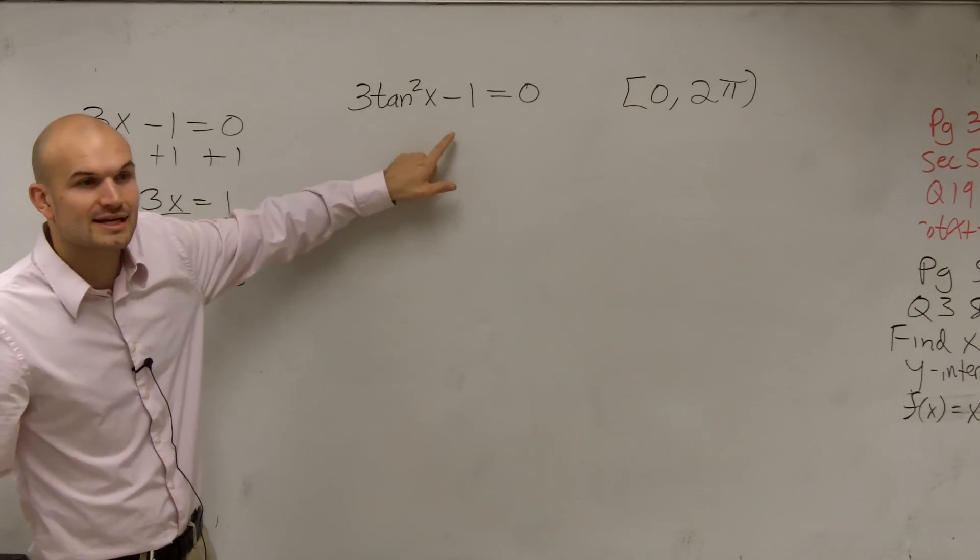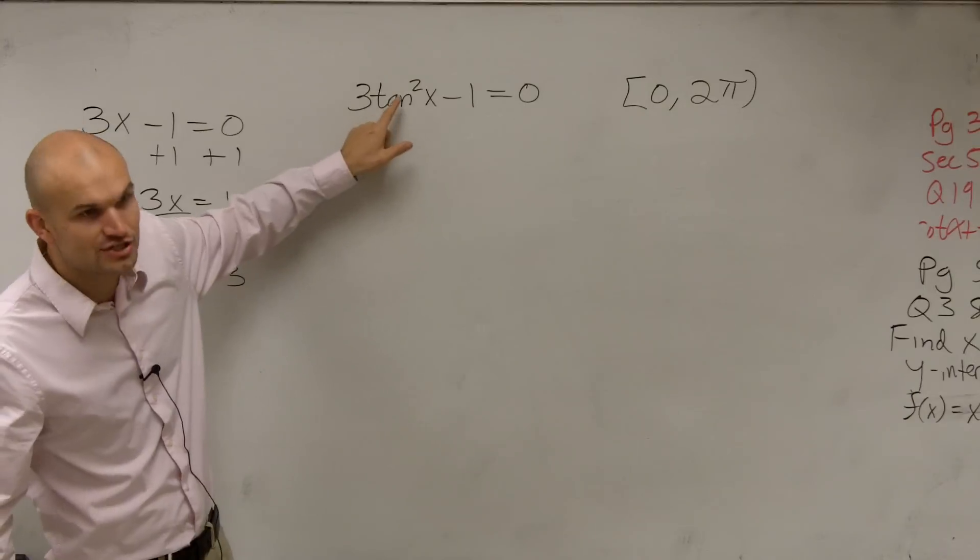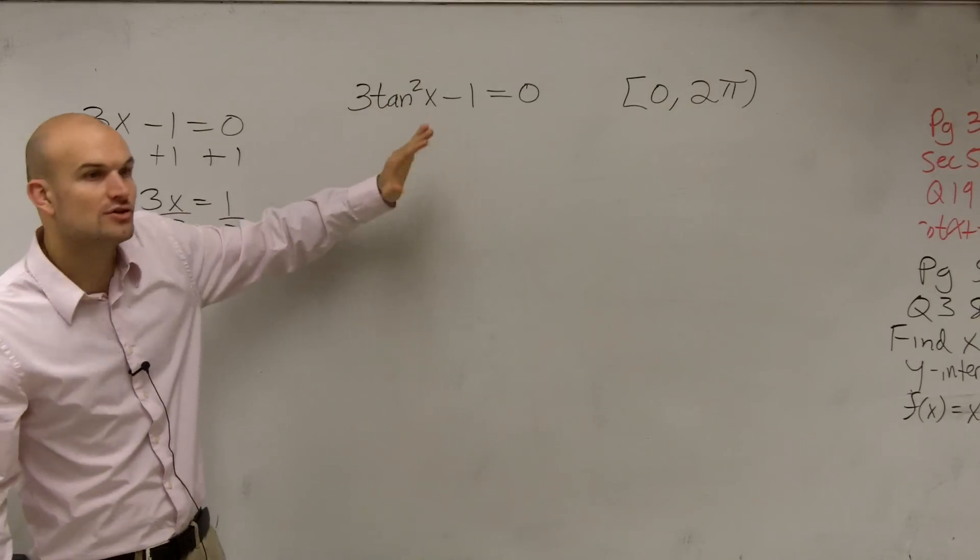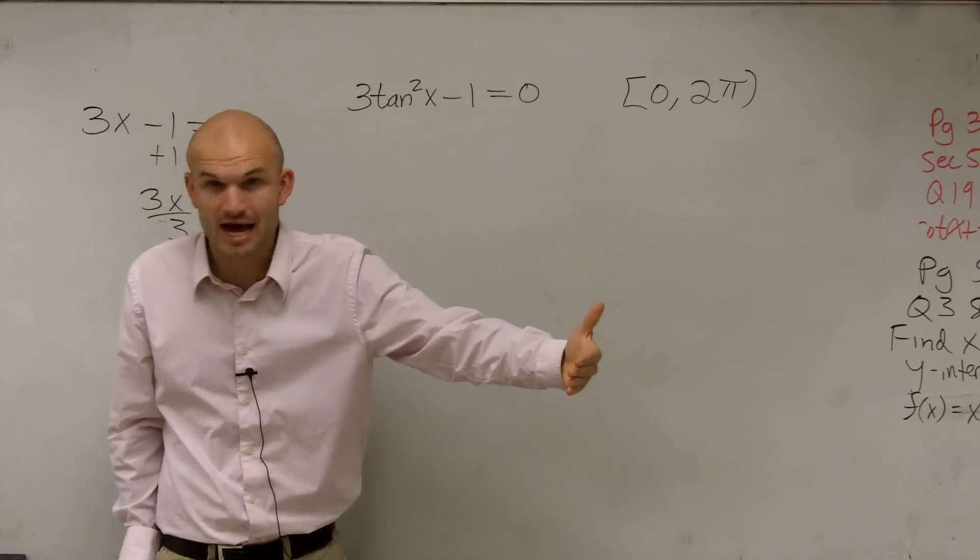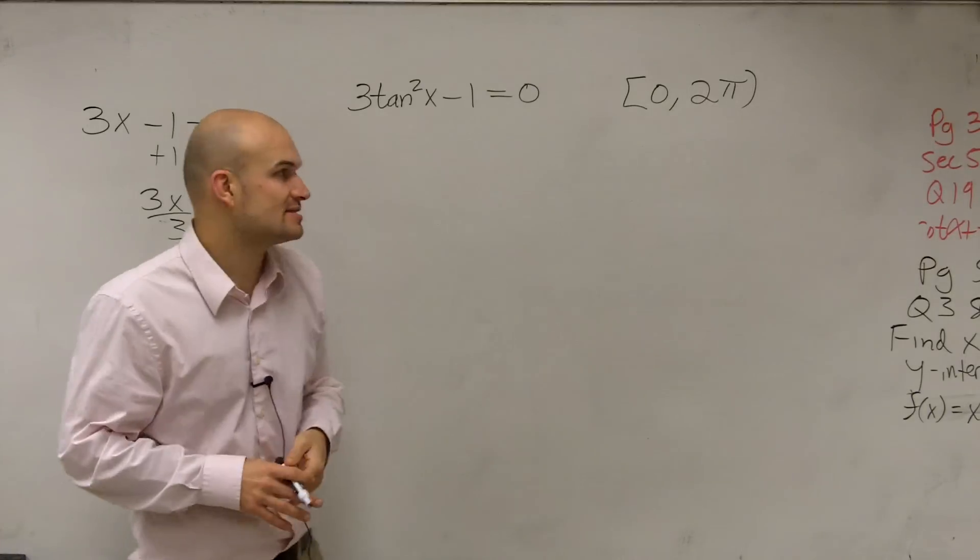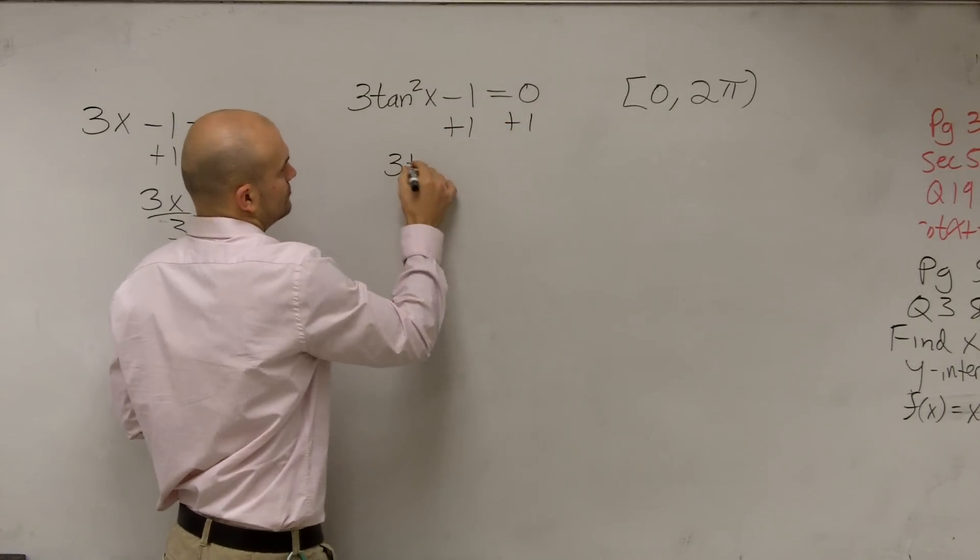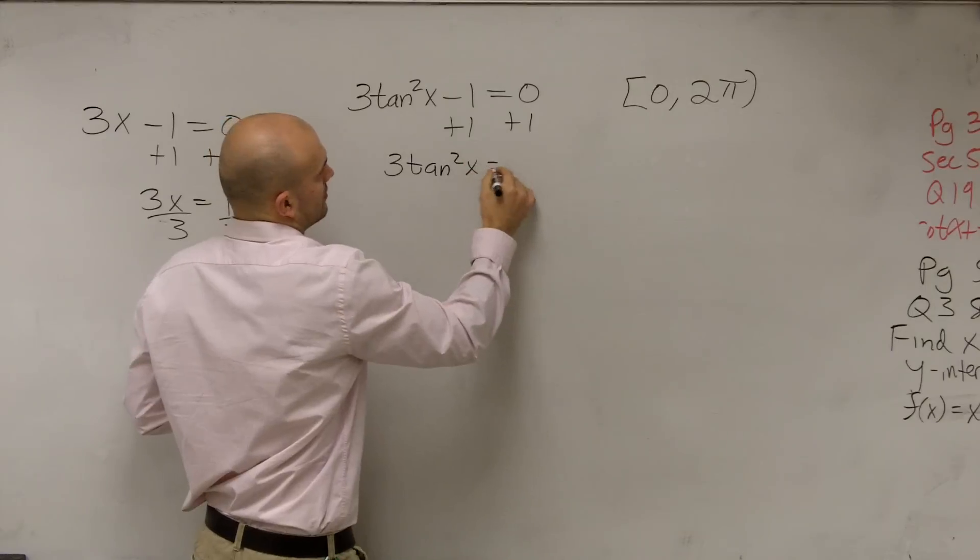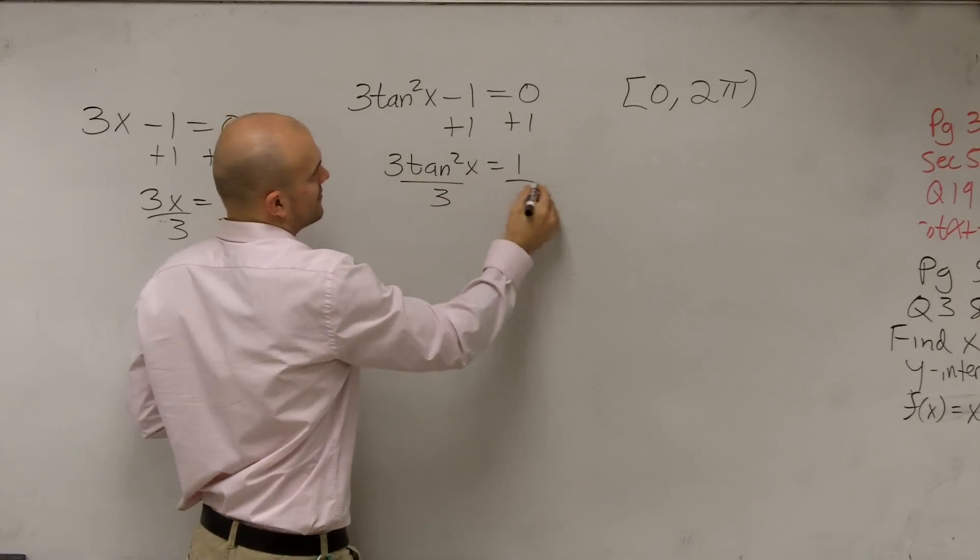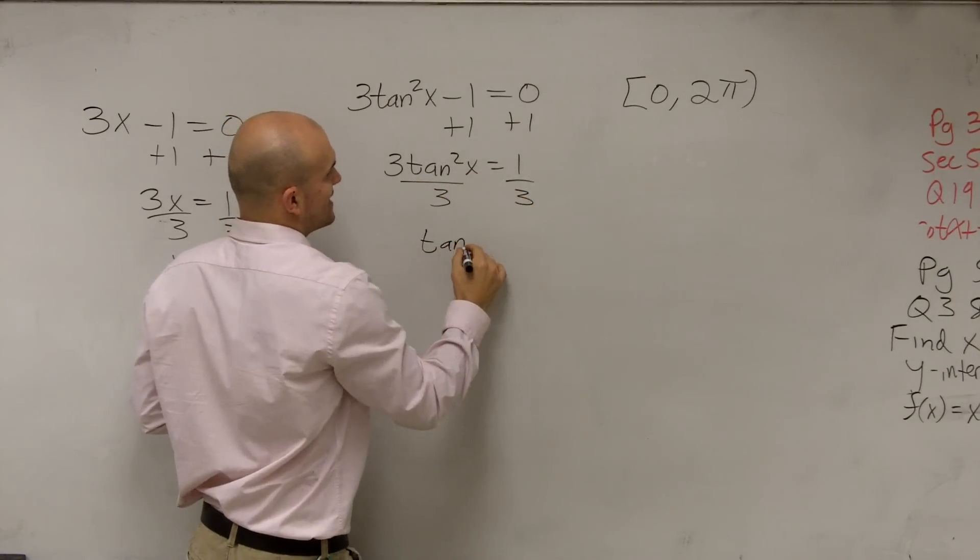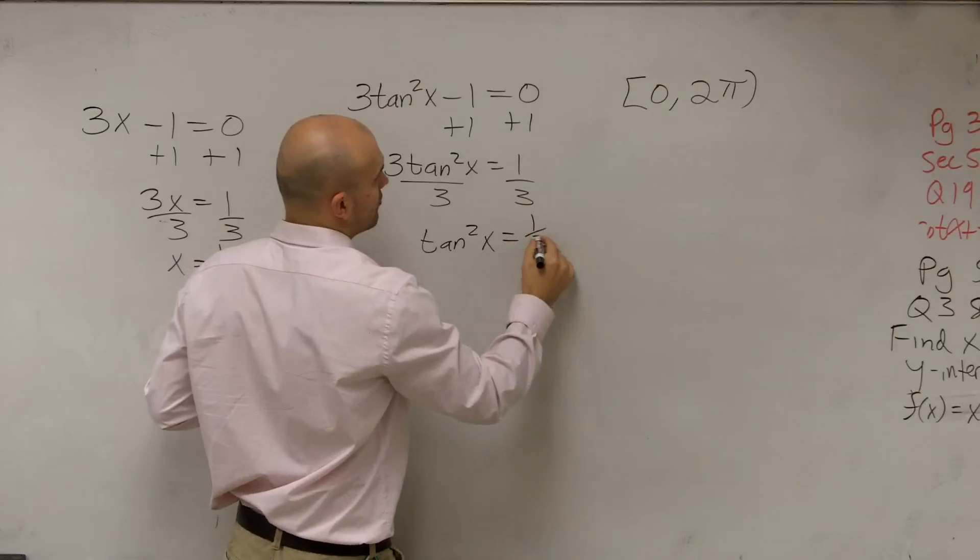But now it's just not x. It's the tangent squared of x. So there's just an extra operation that's happening to the variable. But let's apply the same rules. We apply our inverse operations, divide by 3. Therefore, we have tangent squared of x equals 1/3.